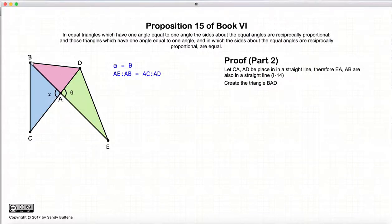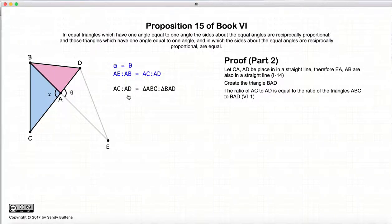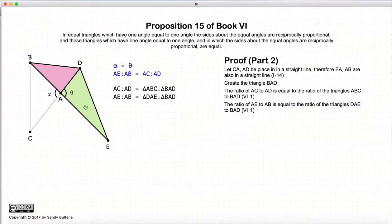So again we start off by drawing a line BD. BE and CD are straight lines and we have this new triangle BAD. We have two triangles on a common base with a common vertex, so AC to AD — the ratio of the bases — is equal to the ratio of the areas. So AC to AD is equal to the area of ABC to the area of BAD. Similarly, the ratio of the bases AE to AB is equal to the ratio of the area of DAE to the area of BAD.